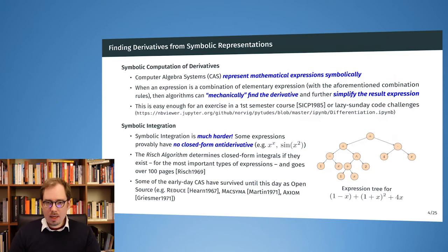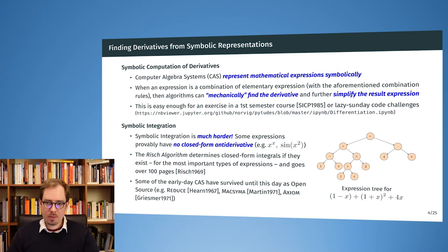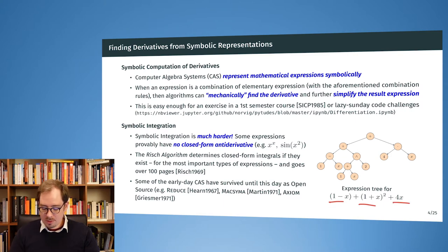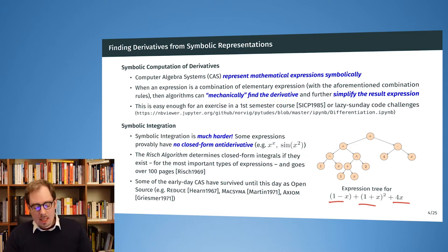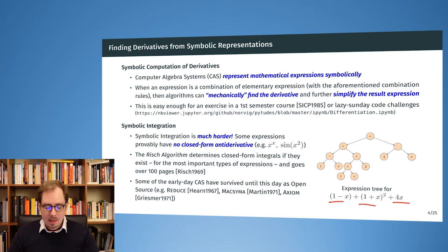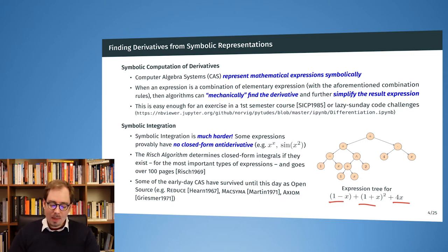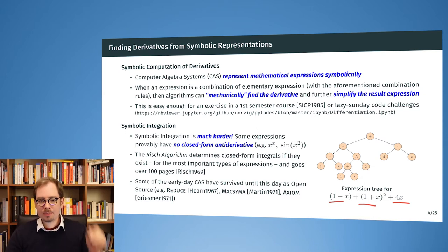The mathematically sounder alternative is to transform the function into a symbolic representation and work on that. For example, the expression (1 - x)(1 + x)² + 4x can be represented as an expression tree internally, with algorithms operating on the tree structure to compute the derivative. Such systems are called computer algebra systems; they have mechanical rules — like turning a crank — that can be applied to reach the result.